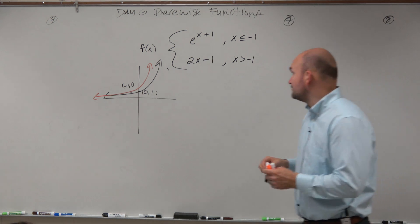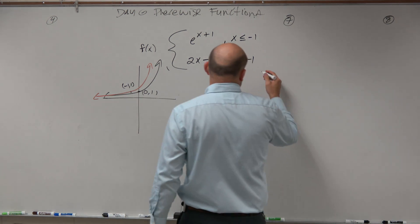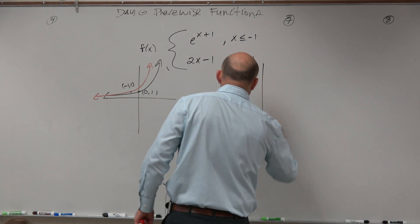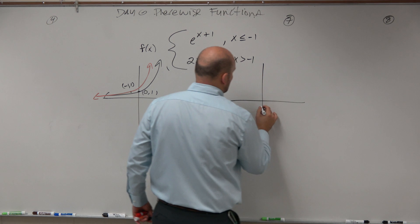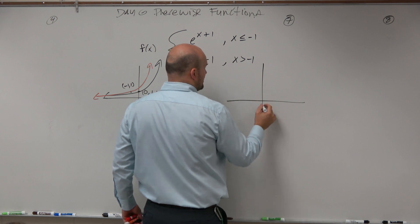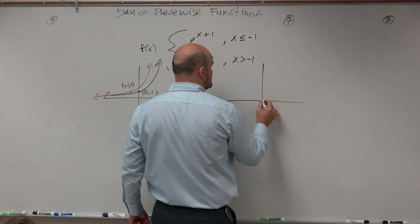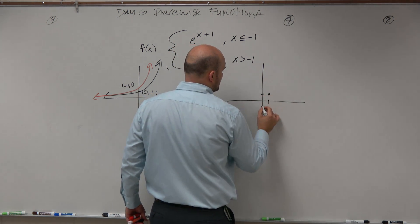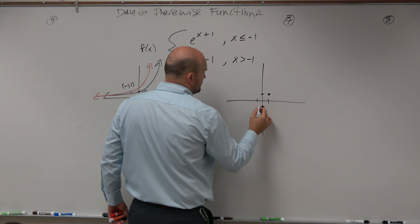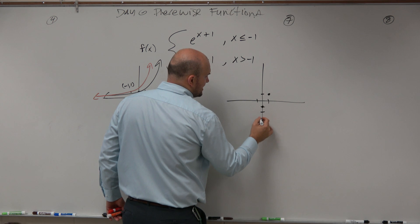And then over here we have 2x minus 1. We're not going to use transformations here — we can just graph that. We're going down 1 and then up 2, over 1. Or you go left 1, down 2.